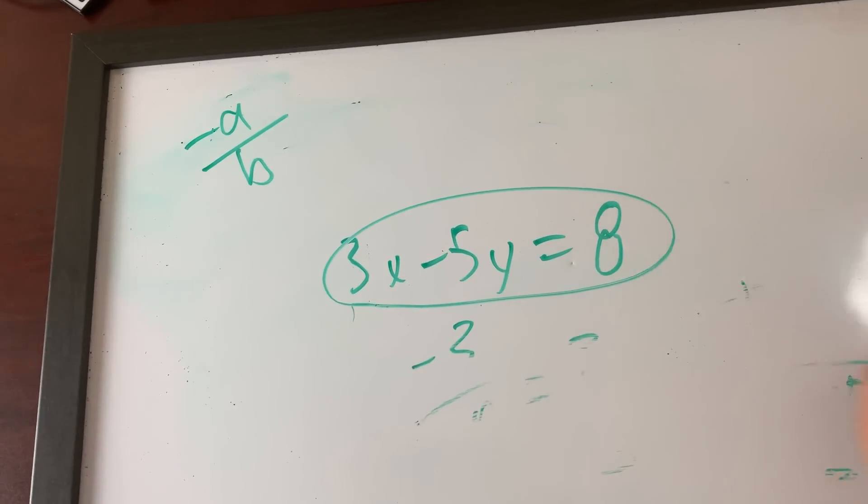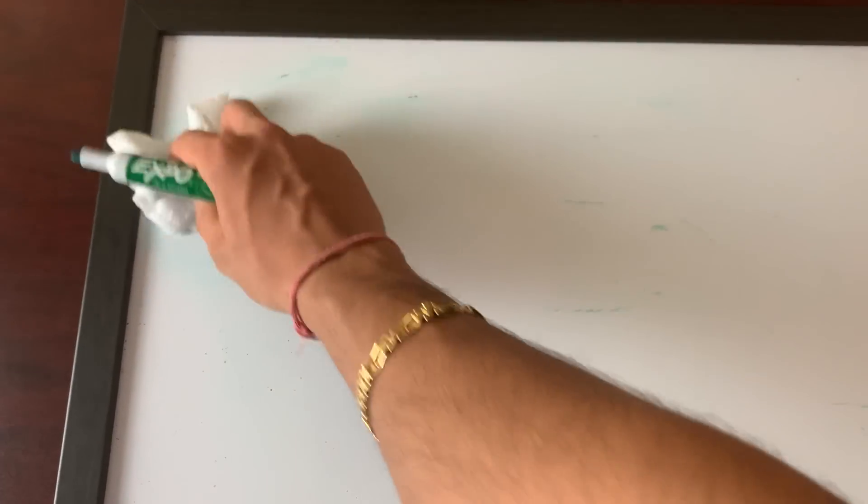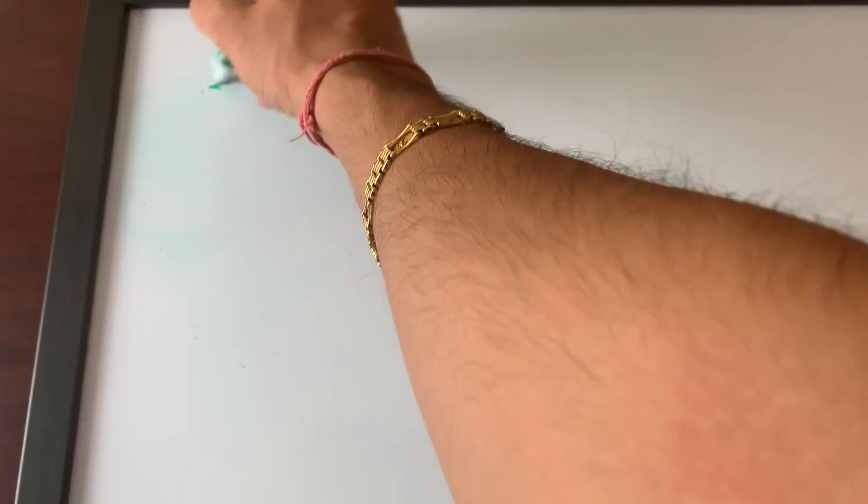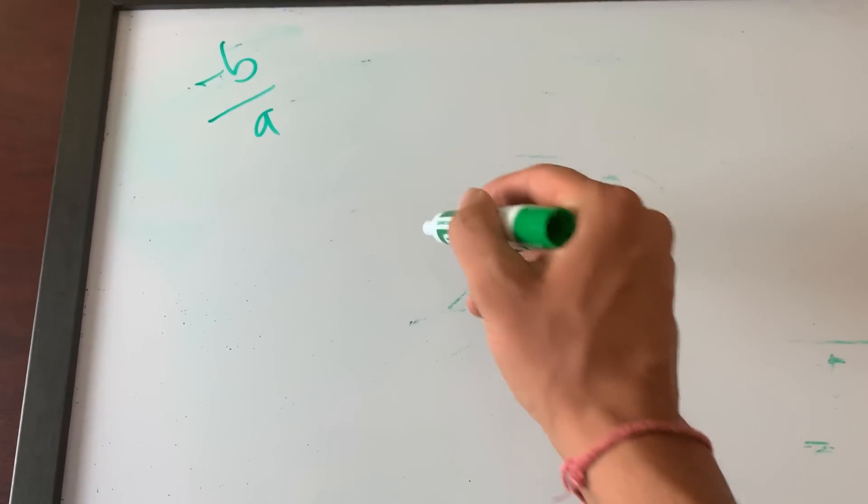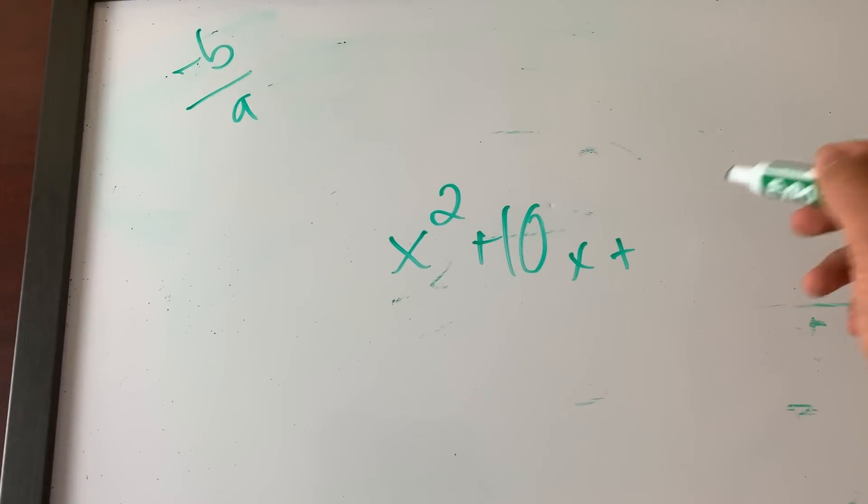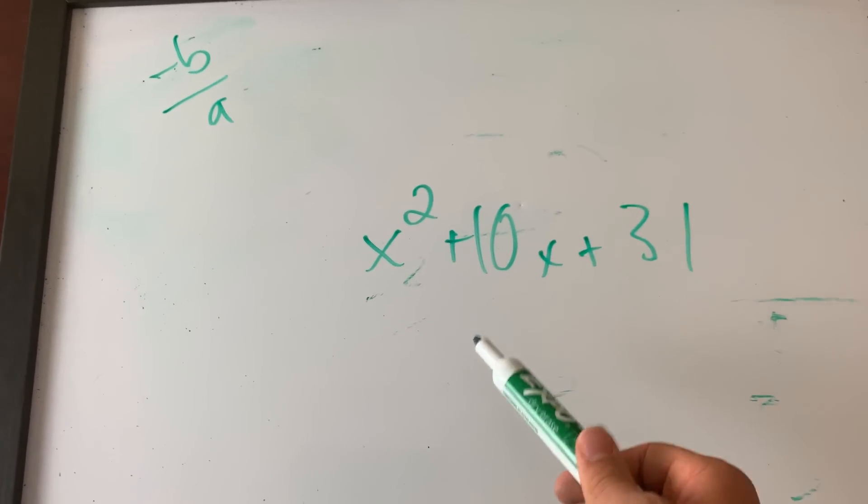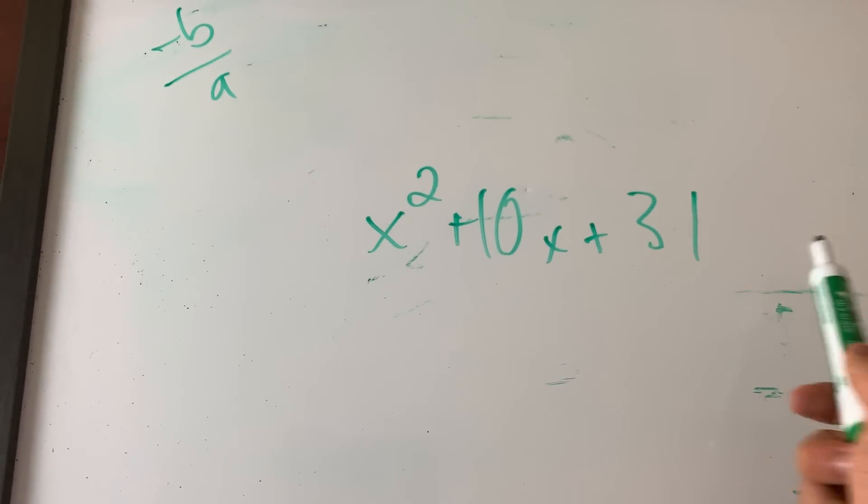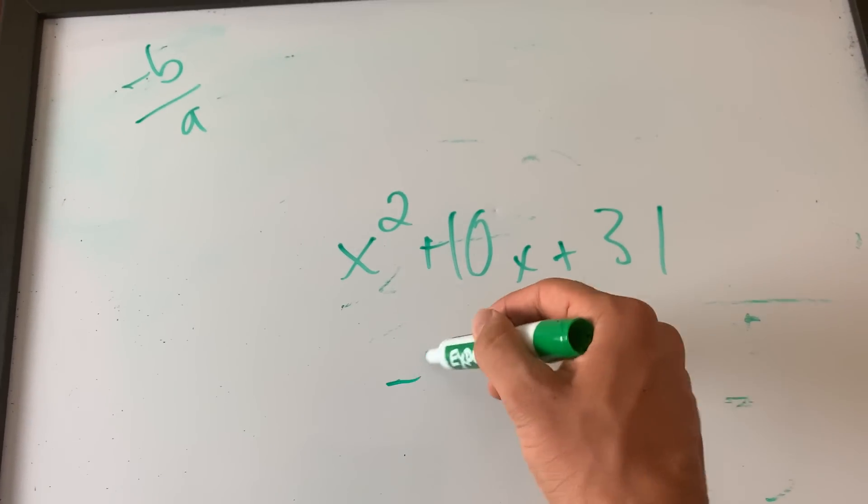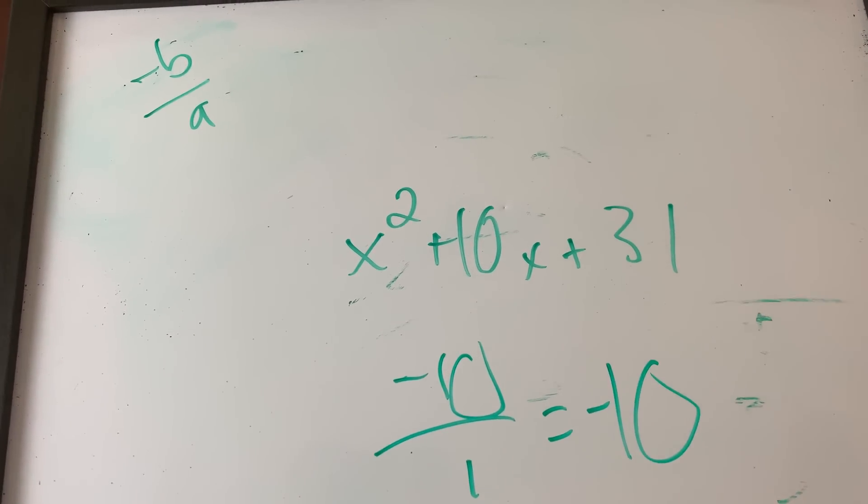The second one, this is probably what I'm most known for I feel like, is negative b over a. So you have x squared plus 10x plus 31. If the question asks you what are the sum of the solutions of this equation, it's negative b over a, so you have negative 10 over 1 equals negative 10. So the answer is negative 10.